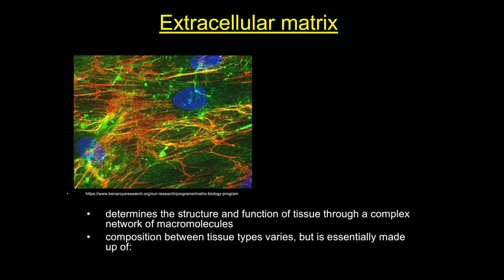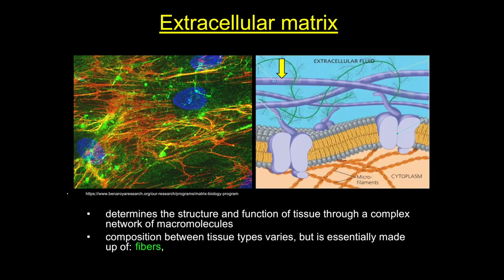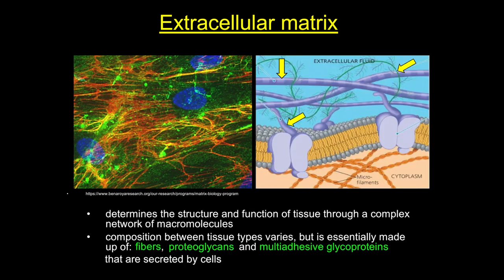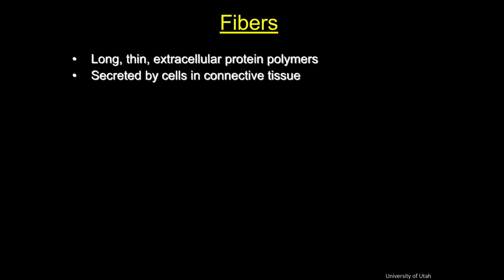The variety of connective tissue types in the body reflects differences in the compositions of fibers and ground substance that make up the ECM, and together they're responsible for the structural, functional, and pathological diversity of connective tissue. Fibers give connective tissue the ability to withstand tensile forces, while ground substance resists compression. Hydration properties of ground substance permit exchange of nutrients and waste products. Today, we'll spend most of our time talking about fibers, and then move on to ground substance.